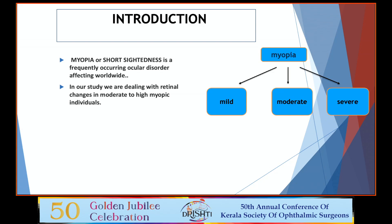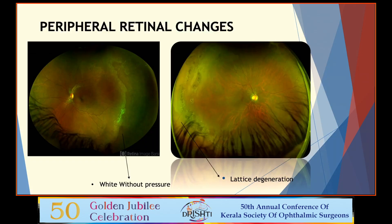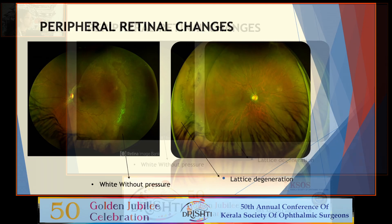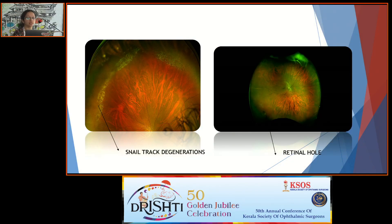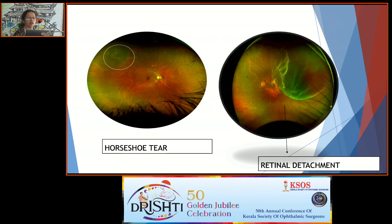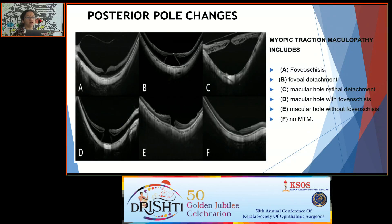Introduction: Myopia, or short-sightedness, is a frequently occurring ocular disorder affecting populations worldwide and can be divided into mild, moderate, and high. In our study we are dealing with moderate and high myopia patients. Peripheral retinal changes include white without pressure, lattice degeneration, snail-tract degeneration, retinal holes, retinal tears, and retinal detachment.